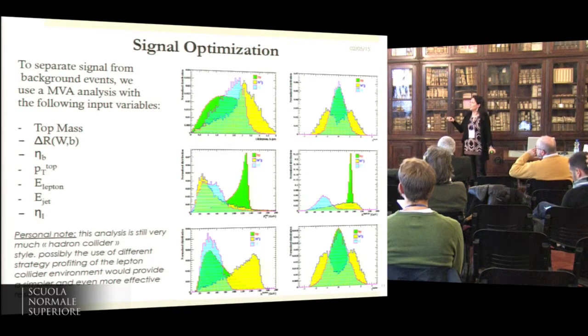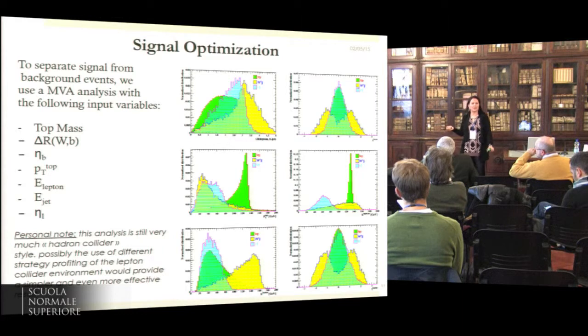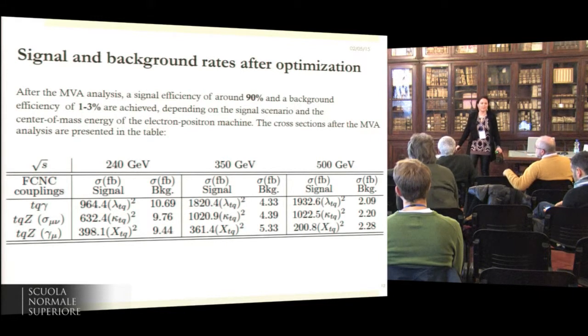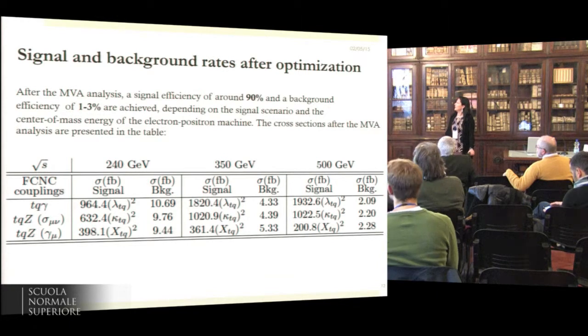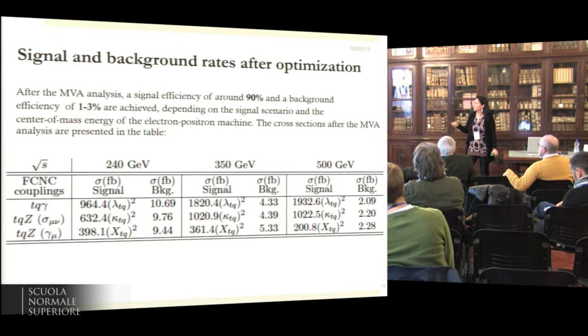To further optimize there is an MVA that maybe at this point is a little bit overkill, but it was available in the package that the group has. After this MVA they can extract even better signal to background rates, so once you have this kind of numbers you can start extracting limits.